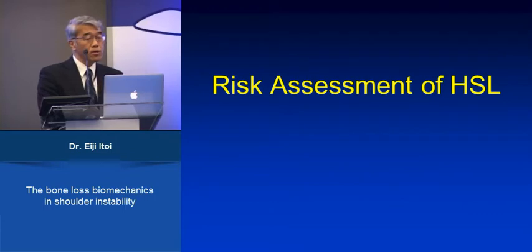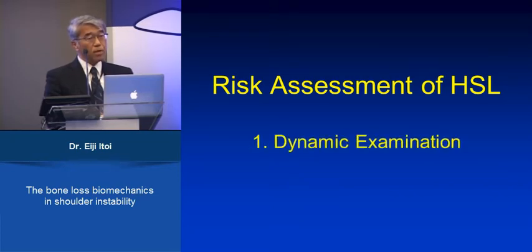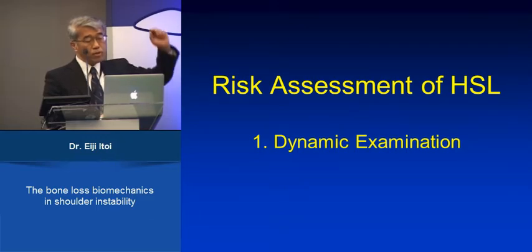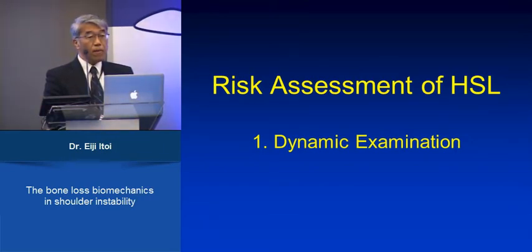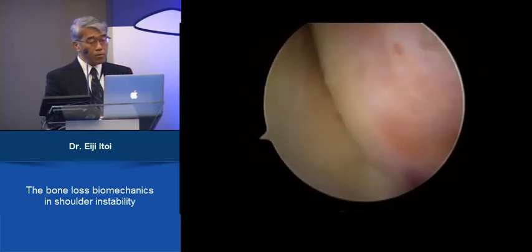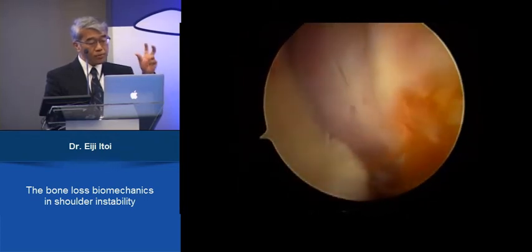How can we assess the risk of a Hill-Sax lesion in a clinical setting? There are two methods. One is dynamic examination. During arthroscopic operation, you bring the arm to abduction and external rotation and see if there is engagement. You might think this is an engaging Hill-Sax lesion and decide to do a remplissage. But that's not the correct way, because before the Bankart repair, the humeral head is basically unstable anteriorly. So with the arm at end range, the head shifts anteriorly and the Hill-Sax lesion causes engagement.